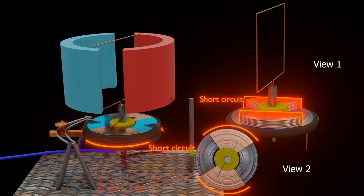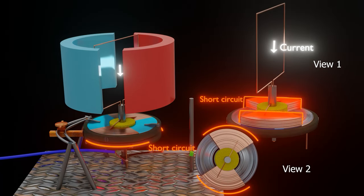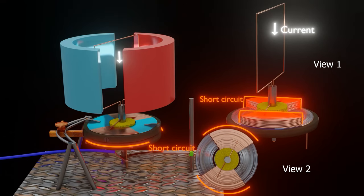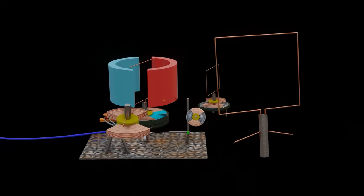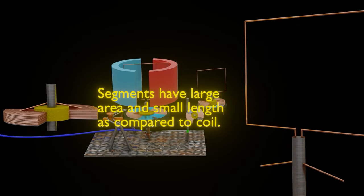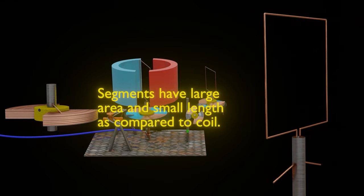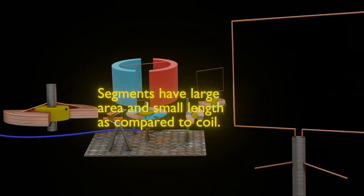When there is a short-circuit, there will be a sudden decrease of current in the armature coil, because now the entire current will bypass the coil and flow through the metallic segments only. This happens because the segments have large cross-section area and small length as compared to coils, therefore it offers less resistance to the current.